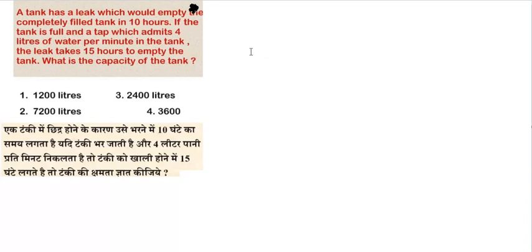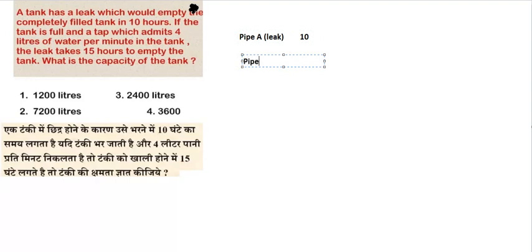In this question we need to find the capacity of the tank. We have one pipe which is leaking and another pipe which is filling the tank at the rate of 4 liters of water per minute. Let's say pipe A is leaking and takes 10 hours, and pipe B is filling and both are working together, taking 15 hours.